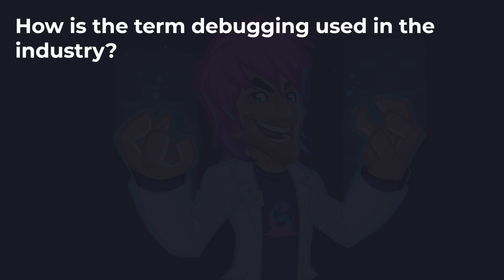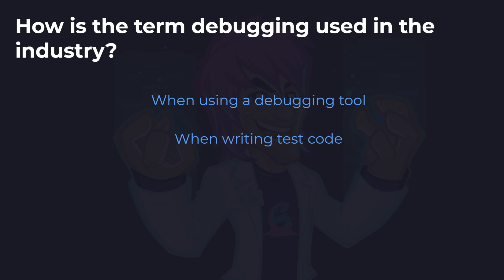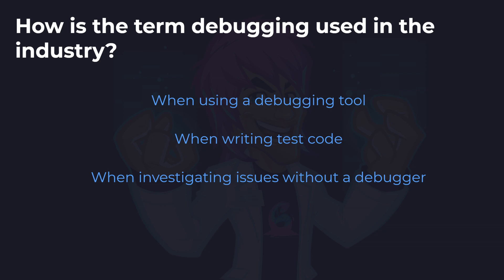How is the term debugging used in the industry? Is it when using a debugging tool, when writing test code, or when investigating issues without a debugger? This is the term that software developers typically use in the real world, not the paper definition. The answer is: when using a debugging tool AND when investigating issues without a debugger. It's incredibly common to use the term debugging when trying to find a problem in code by any means necessary, not technically only when using a debugger.